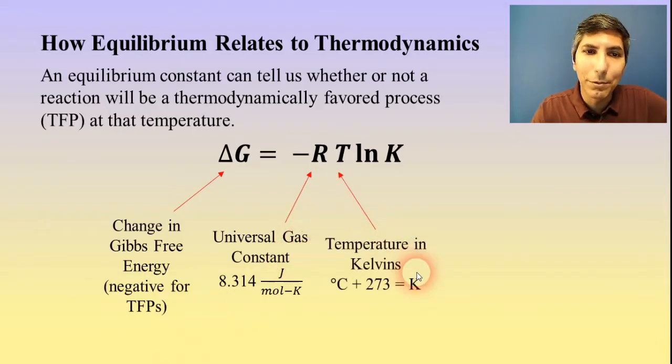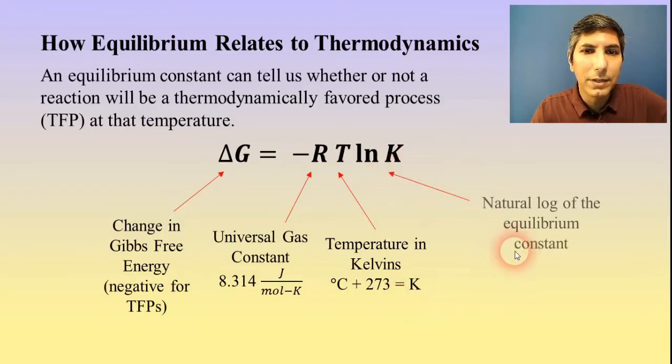T, of course, represents the temperature at which we're working in Kelvins. Just remember, if it's in Celsius, you have to convert it, as you see here. And then LN K, that represents the natural log of the equilibrium constant. On your calculator, you have an LN button, which will help you to do this.